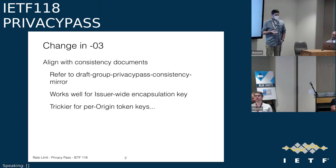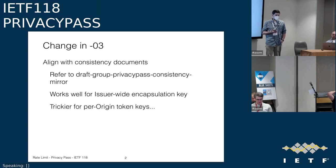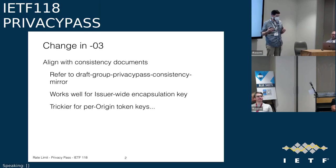We haven't had a lot of fundamental changes. I wanted to quickly recap what we have changed in the latest update. The primary thing we had talked about last time was that we needed to align with the work on consistency, since that has been evolving. We've now created a reference to the consistency mirror draft, which is the output of the design team. The authors for the rate limit draft are interested in what happens to that draft and whether we want to adopt it here.